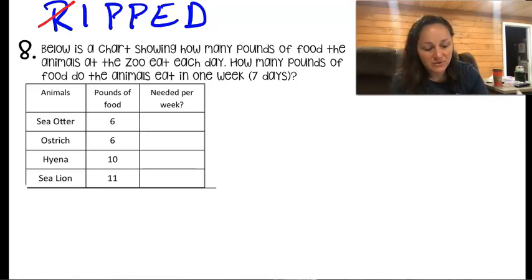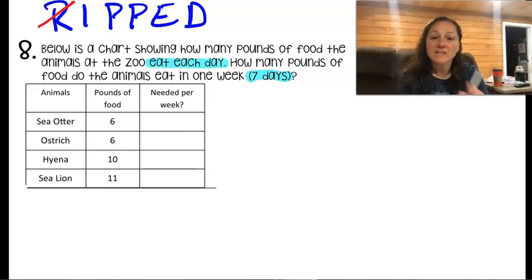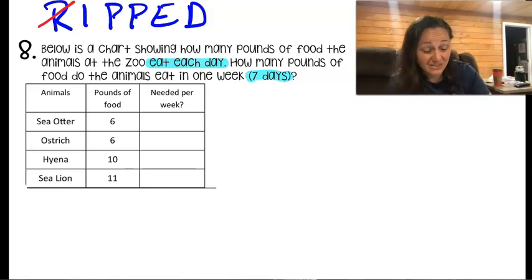I - identify the important information. It says how many pounds of food do the animals eat in one week or seven days. So I need to know seven days is very important, and this is how much they eat each day. So that's very important too. Because I know that's one day's worth of food, then seven days. So what am I going to do if it's one bunch of food for seven days? Groups of - that's kind of interesting. That would lead me to - what am I going to do?